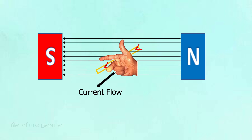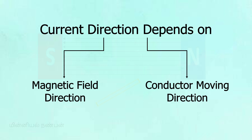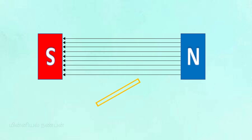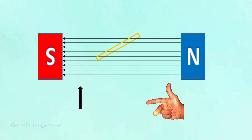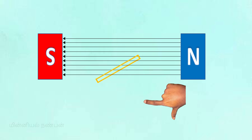The current flow direction is determined by the wire's motion. The video will show you how to visualize this. We will finish this video. If we want to understand this, the magnetic field direction, the movement direction, and the current flow direction are all related. That is why the current flow follows the current direction.